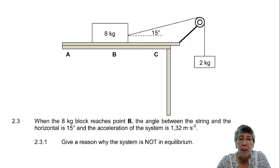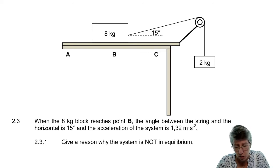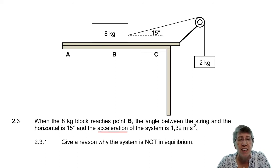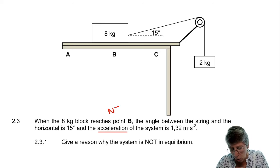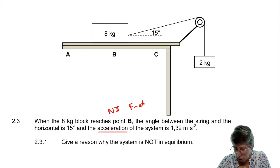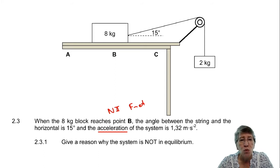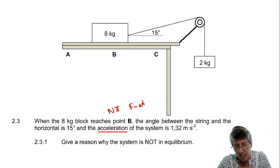In 2.3.1, they tell us that when the block reaches point B, the angle between the string and the horizontal is 15 degrees, and the acceleration of the system is 1.32 metres per second squared. The word 'acceleration' is very important — it tells us we're working with Newton's second law and there is a net force present. So when they ask for a reason why the system is not in equilibrium: equilibrium means net force is zero, and that is not true here. The reason is that the system accelerates, and the net force is therefore not equal to zero.